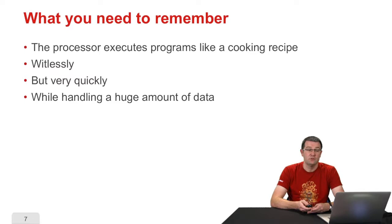What you need to remember about this sequence, it's first, that the processor executes the program like a cooking recipe, it takes all the instructions one after the other, it takes the ingredients it needs, it processes them, and then it stores the result. It does this witlessly, so it really needs to be spoon-fed, by giving it a very detailed recipe, it won't be able to guess what's missing, but on the other hand, it will do so very quickly, billions of operations per second, and while handling a lot of data, much more than a human could handle, but again it does it witlessly, without intelligence.